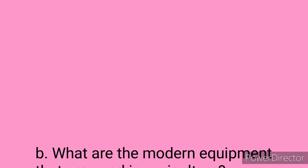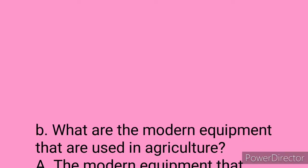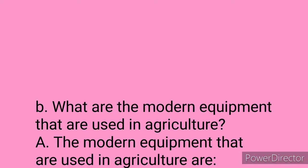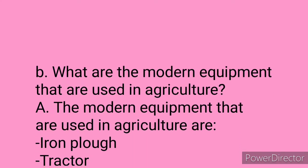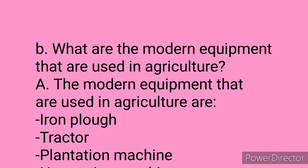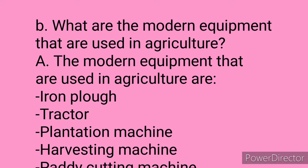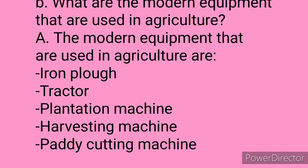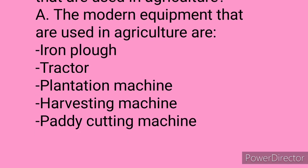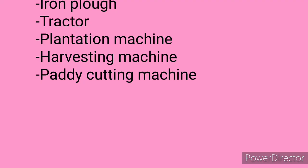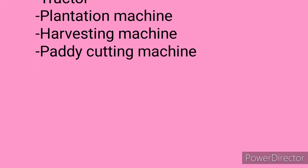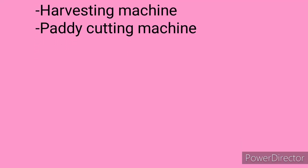Next B1: What are the modern equipment that are used in agriculture or cultivation? The modern equipment that are used in agriculture are iron plough, tractor, plantation machine, harvesting machine, and paddy cutting machine.